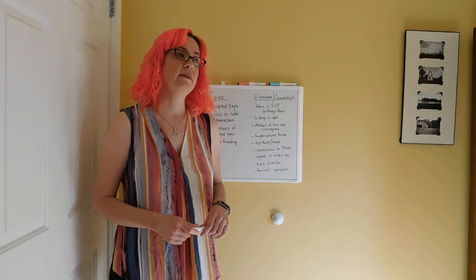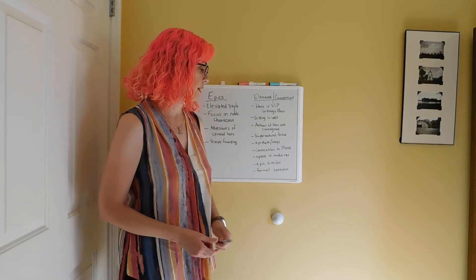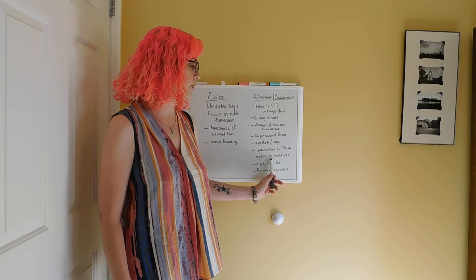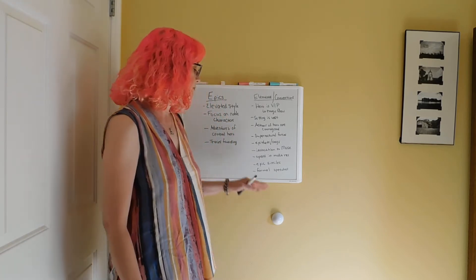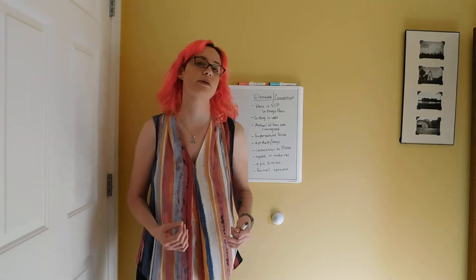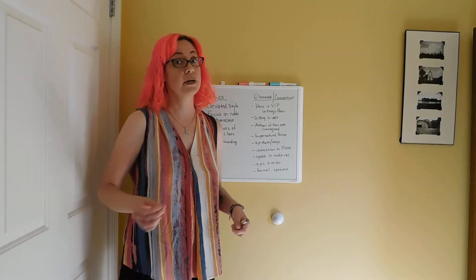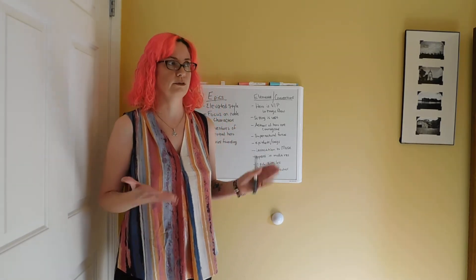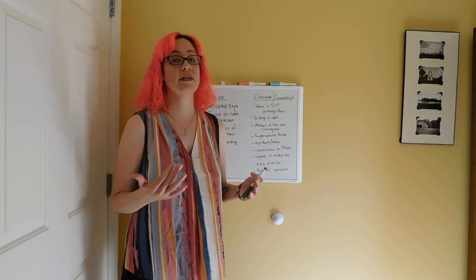Epics open in medias res — a Latin term meaning 'in the middle of the action.' You can almost recognize the words 'in' and 'middle' in the phrase. In the case of the Odyssey, you're opening after Odysseus has already been gone from home for 20 years. You actually begin with his son, not with Odysseus himself. His son is 20 years old — his wife was pregnant when Odysseus left, and his son was born after he set sail. The war took 10 years, and then it takes Odysseus another 10 years to get home.